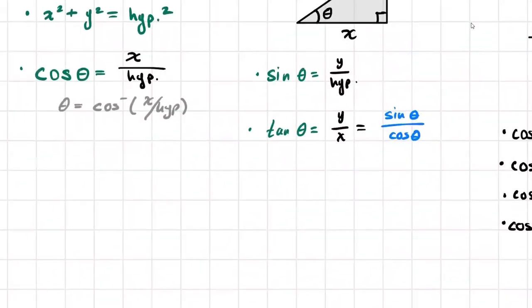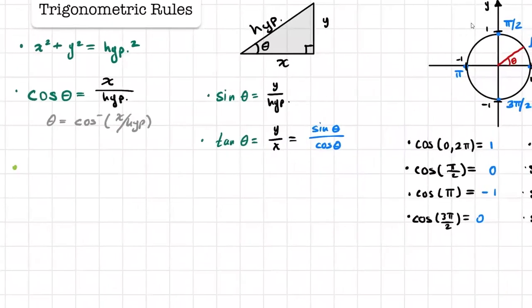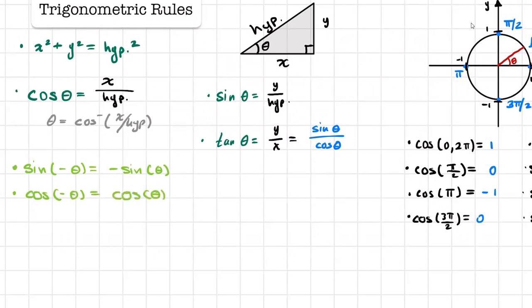We also have these last identities that we'll be using soon. Whenever you have sine of negative theta, you can rewrite it as negative sine of positive theta. Whenever you have cosine of negative theta, it's the same as cosine of positive theta. For example, sine of negative 30 is the same as negative sine of positive 30, or cosine of negative 45 is the same as cosine of positive 45.